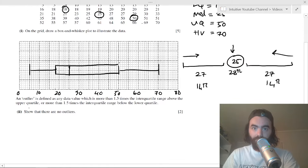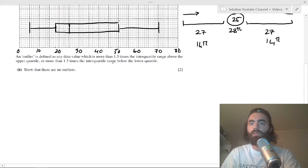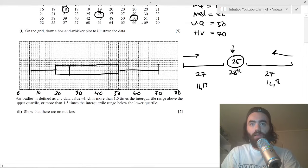It says the outlier is defined as a data value which is 1.5 times the interquartile range above or below.